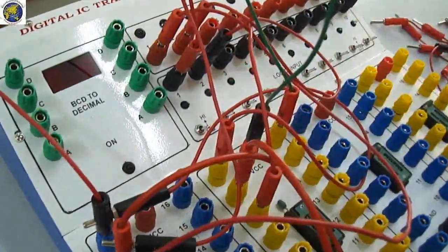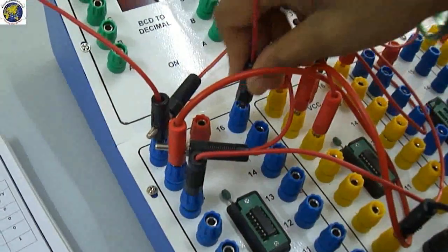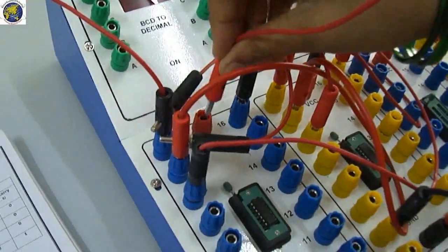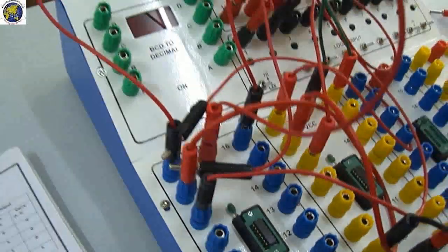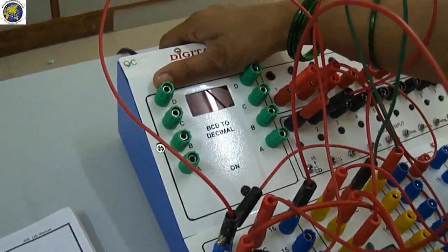Next switch on the trainer. If both inputs are 0, you will get sum is 0 and carry is 0.